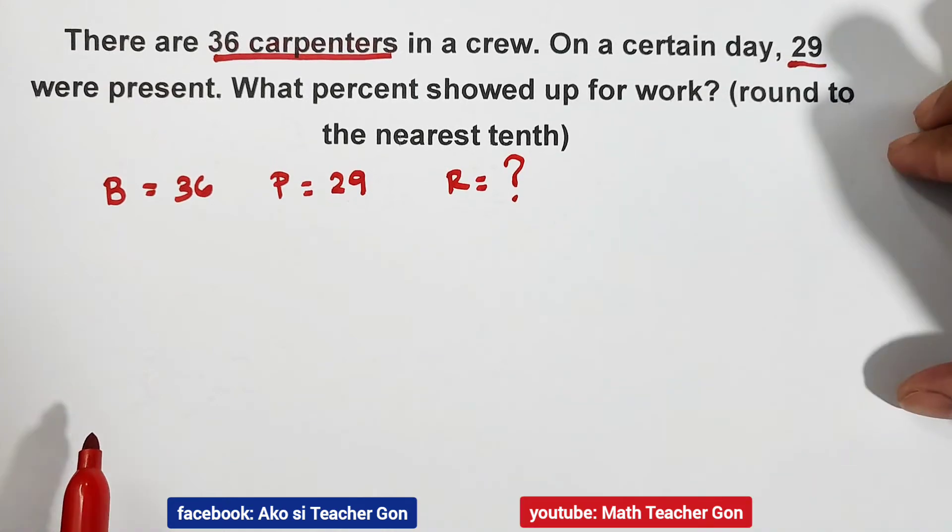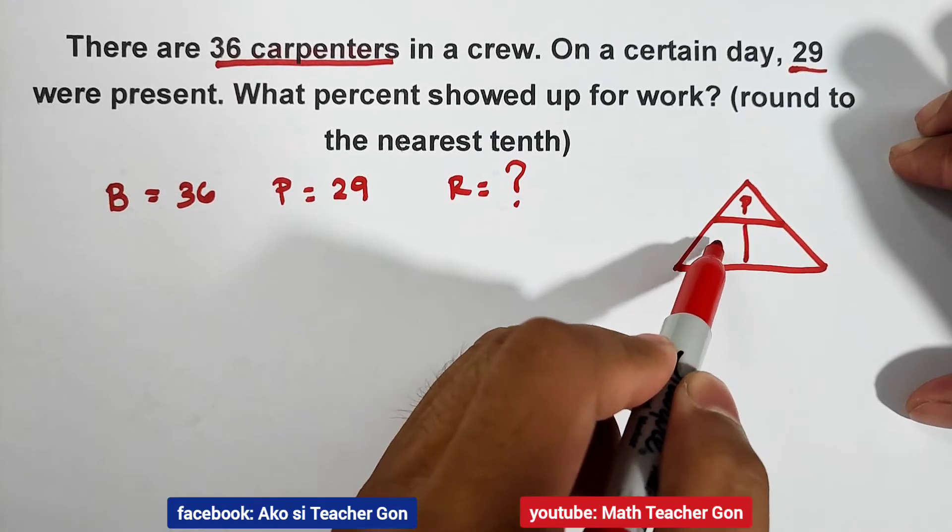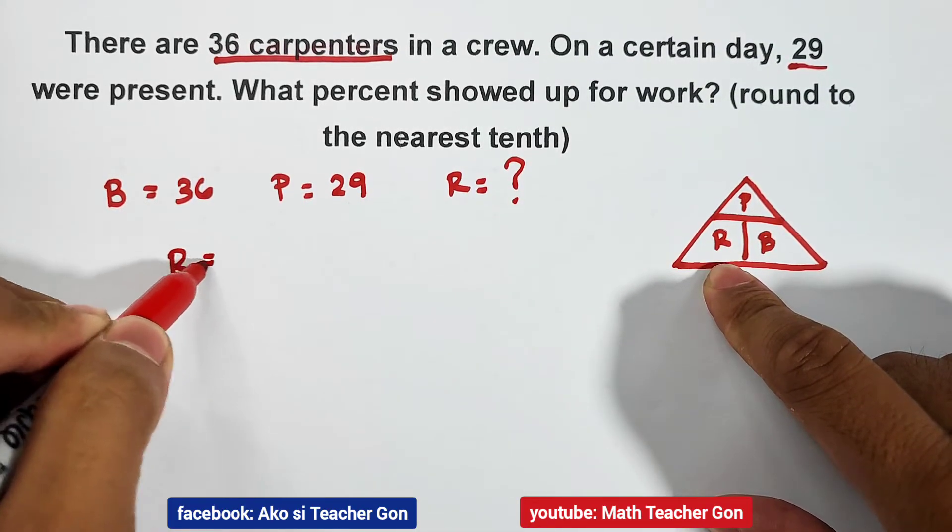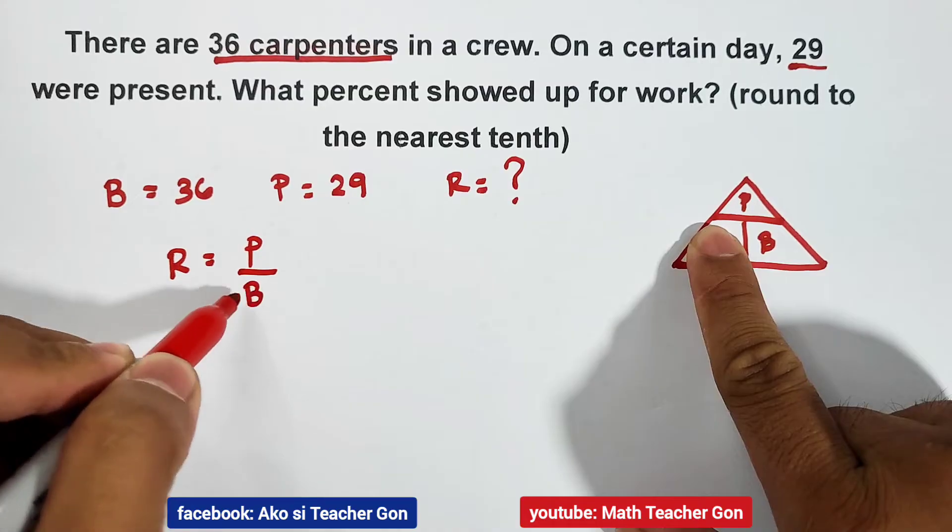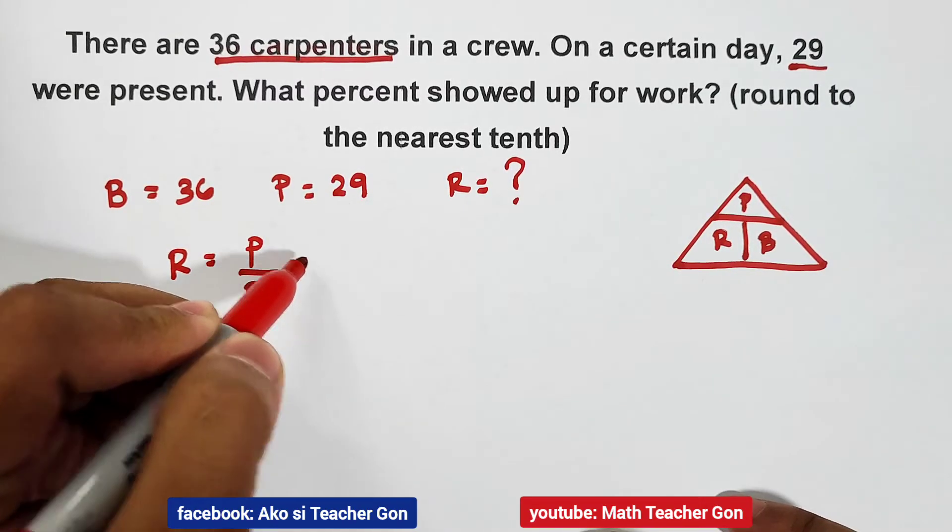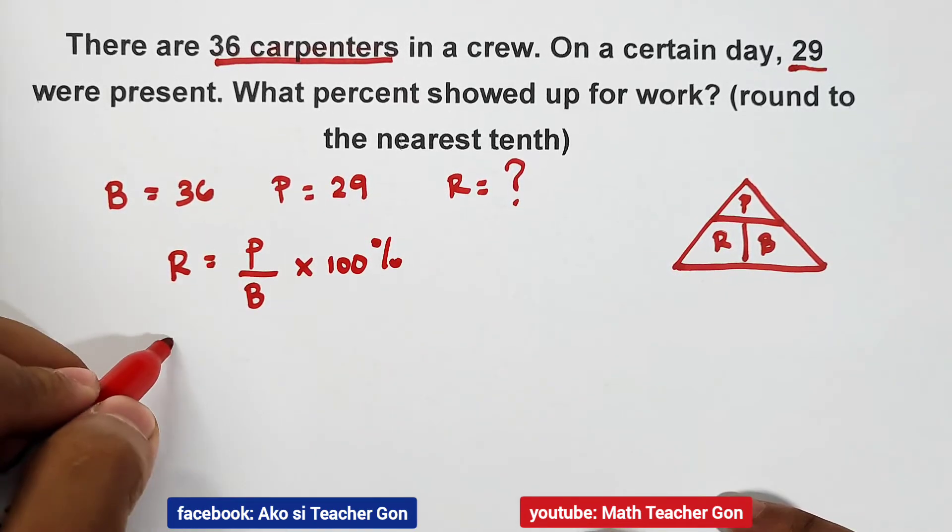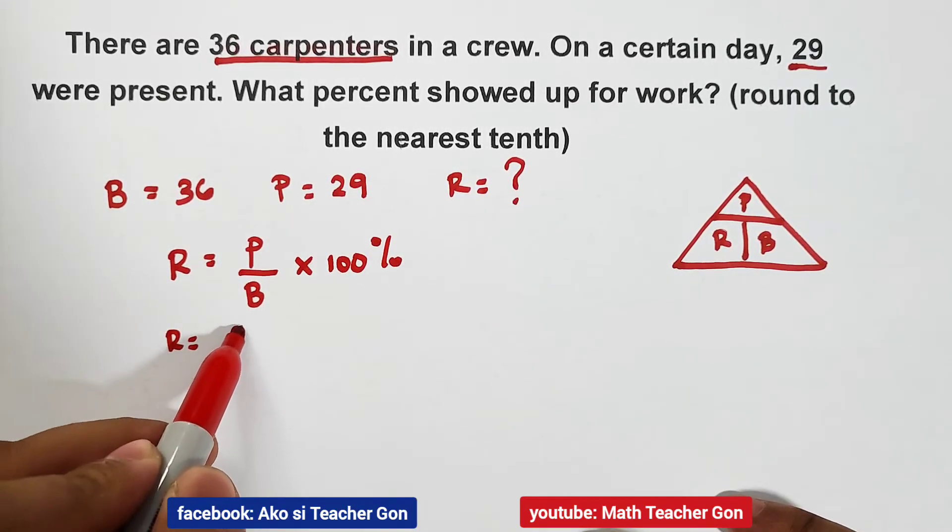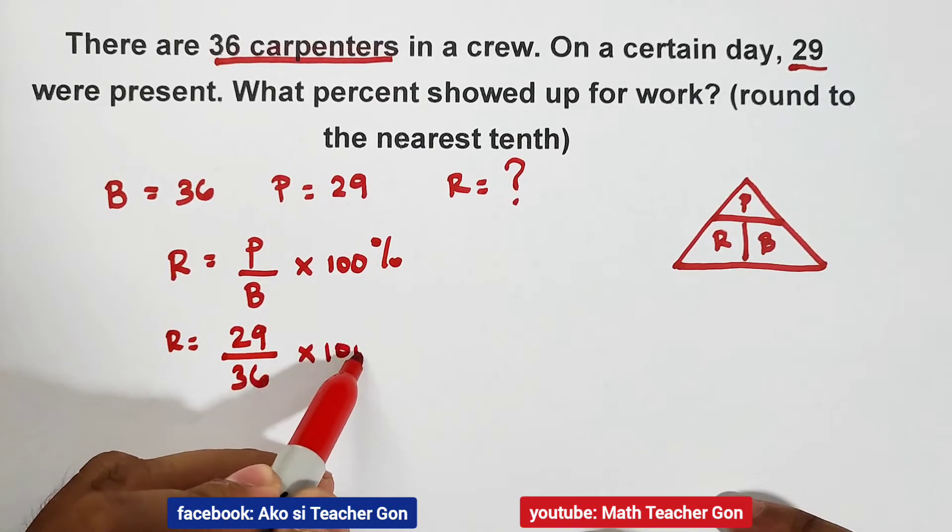So how do we calculate that? Using the triangle, P, then R, B. Since R is missing, cover R. And then as you can see, P over B. That is P over B, or percentage over base. So what will happen? Substitute the value of P, or we can multiply by 100% right away. R is equal to your P, which is 29, over your B, which is 36, times 100%.